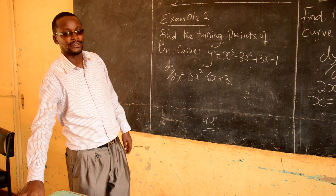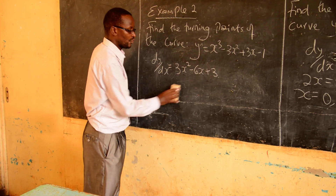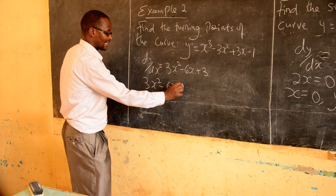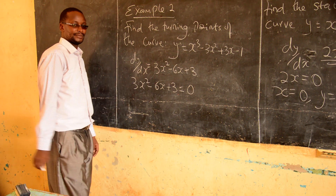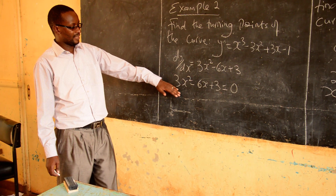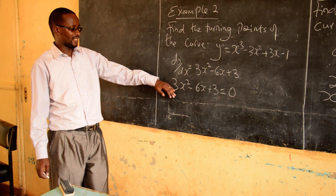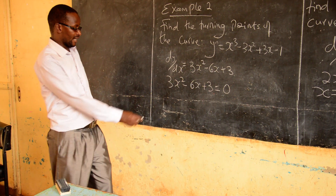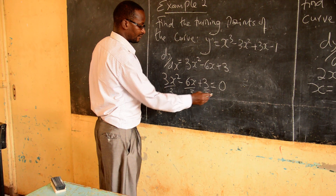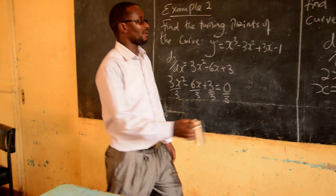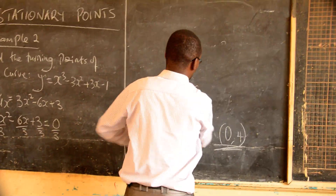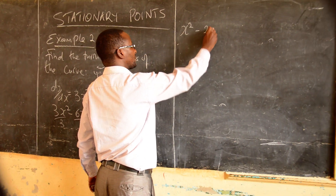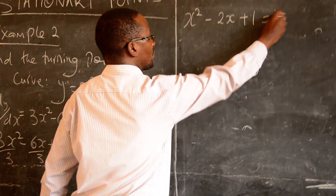So this is the gradient function. To get the turning points, you equate this to zero: 3x squared minus 6x plus 3 equals zero. This is a quadratic equation. We solve it — we can use several methods. Before we do that, we can simplify it by dividing by 3 throughout. Our equation simplifies to x squared minus 2x plus 1 equals zero.